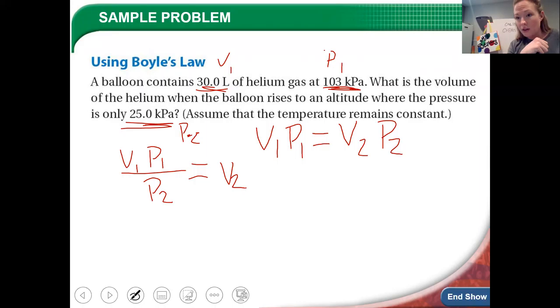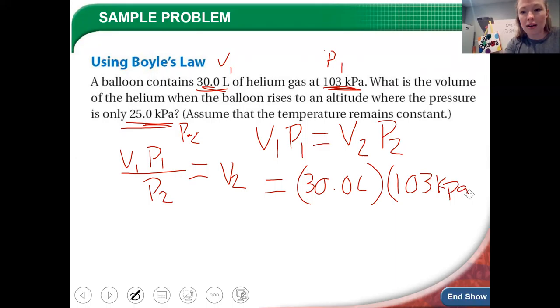So we're going to plug in 30.0 liters. I like to put parentheses here to keep things separated. Initial pressure, 103 kPa over P2, which is 25.0 kPa. The cool thing is everything in this problem has three significant figures. So your answer will certainly have three significant figures. 30 times 103 divided by 25.